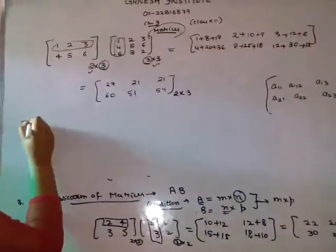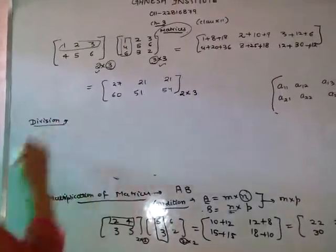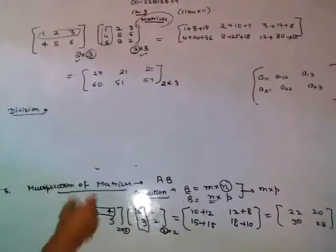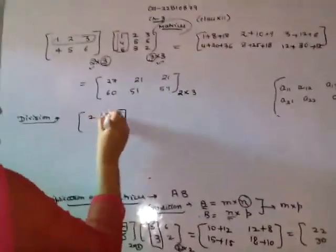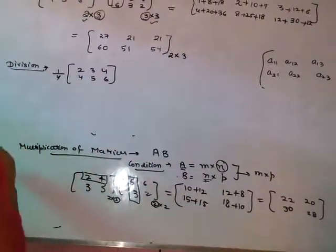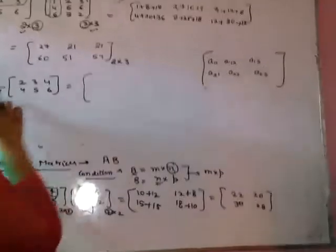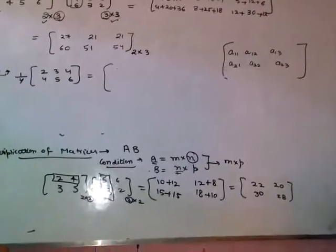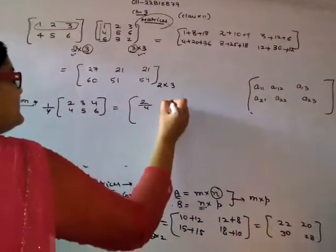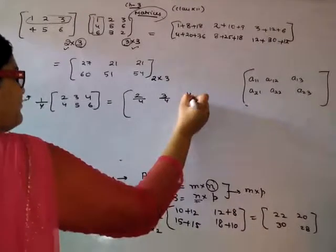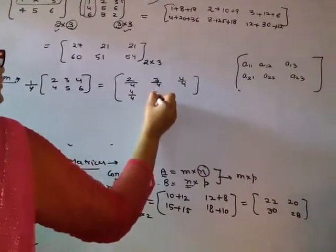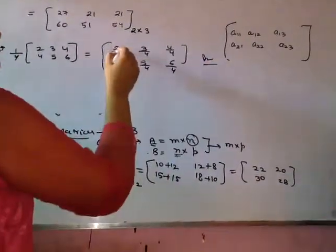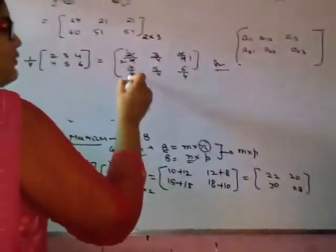Now we are talking about division of matrix. Two matrices cannot be divided further, but they can be divided by a scalar. So this becomes 1 by 4 is multiplied, or 4 is divided to each and every element of this matrix. What will happen now? 2 by 4, 3 by 4, 4 by 4, 5 by 4, 6 by 4. This is our answer, or you can also simplify this into further smaller fractions.